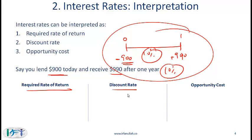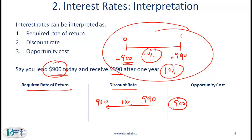The discount rate interpretation: if you think of the $990 you are getting after 1 year, you can discount $990 at 10% to get the present value of $900, so 10% can also be thought of as a discount rate. As for opportunity cost — if you had taken the $900 and spent it on something else, you would have foregone the 10% return. The concept of opportunity cost is the cost of what you forego, so 10% is also the opportunity cost.